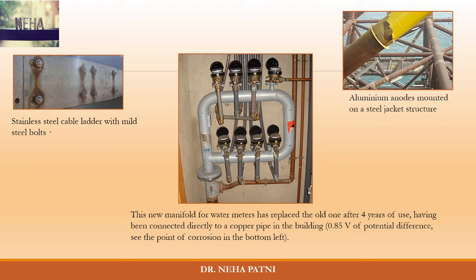A few more examples: stainless steel blended with mild steel board — mild steel is higher in the series so it corrodes. Copper and steel plumbing should not be used together as they will corrode. Aluminium anodes are mounted on steel jackets as a protective measure. In general, if two dissimilar metals must be used, ensure they are not widely separated in the galvanic series, and if possible, ensure they have no electrical contact so the cell is not completed. Absence of electrolyte also helps.